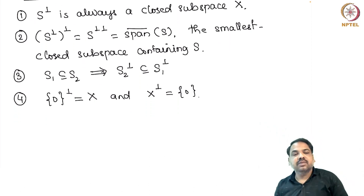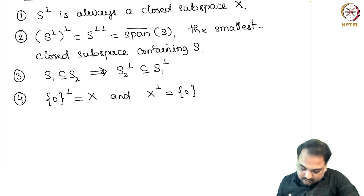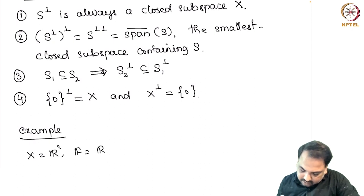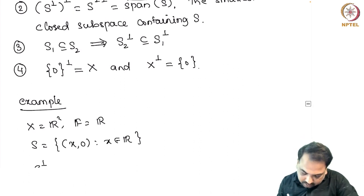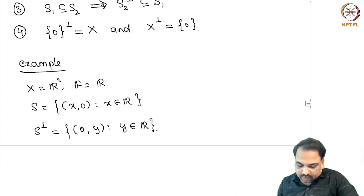This is about the orthogonal complement of a set in an inner product space. For a simple example, let us take X to be R2 over the field R. Let S be {(x, 0) : x ∈ R} — this is the x-axis. We can show that S⊥ is nothing but the y-axis. This can be shown very easily.